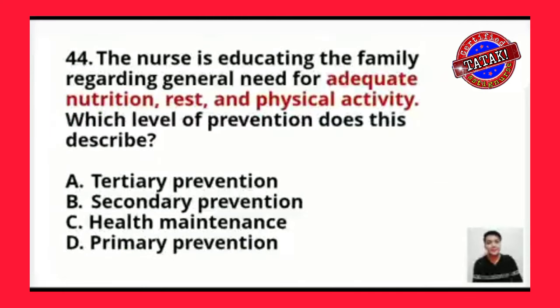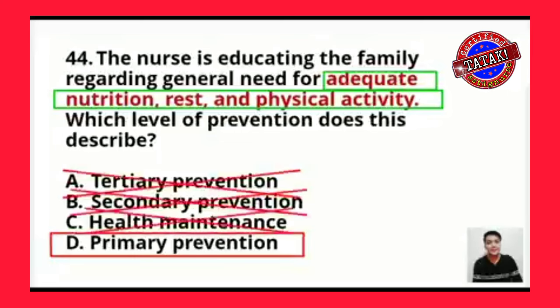Question number 44: the nurse is educating the family regarding the general need for adequate nutrition, rest, and physical activity. Which level of prevention does this describe? A, tertiary prevention; B, secondary prevention; C, health maintenance; or D, primary prevention. Health education regarding adequate nutrition, rest, and physical activity is part of primary level of prevention. The correct answer is letter D.